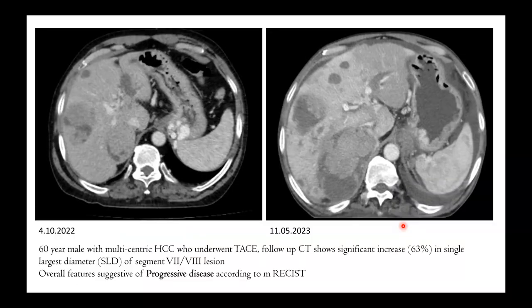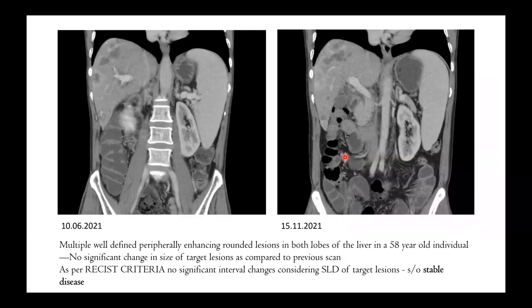We have a case of a 60-year-old male with multicentric HCC who underwent TACE. On follow-up CT, it shows a 63% increase in the single largest diameter of the lesion in segment 7 or 8, which is suggestive of progressive disease. Another case shows multiple well-defined peripherally enhancing round lesions which on follow-up CT show no increase in the single largest diameter, suggestive of stable disease.